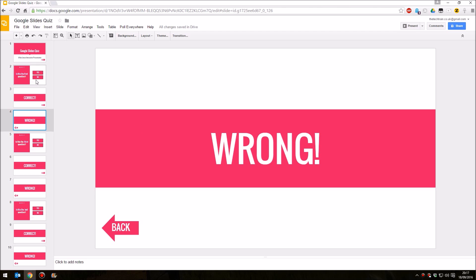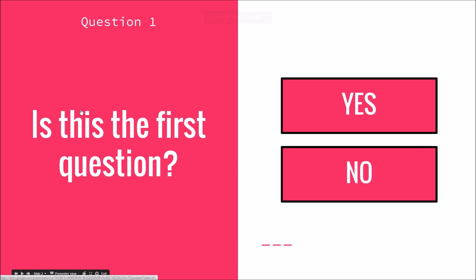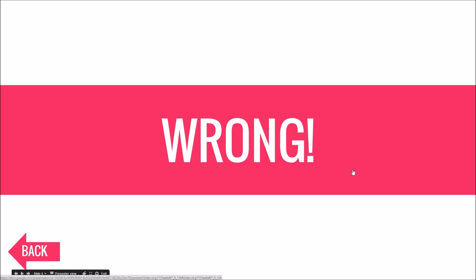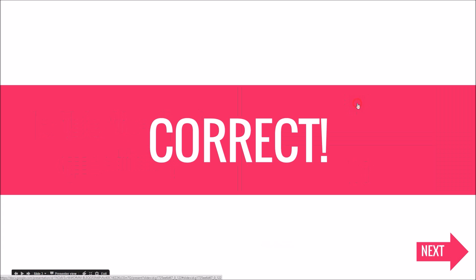Clicking anywhere on the screen will not take them automatically to the next slide. So if I was to present this quiz to you, you'll see here - is this the first question? And if I click anywhere on the screen, I'm clicking all around the screen there. It is not proceeding to the next slide. If I click the wrong answer - so if I click no, it's not the first question - then I'm told wrong. Clicking anywhere on the screen does nothing at all. I have to click the back button. That takes me back to the question. I can then answer the question correctly, clicking yes.